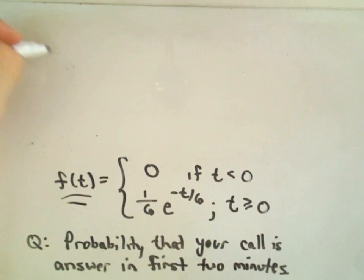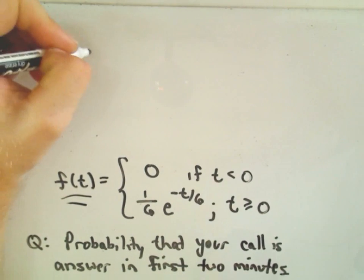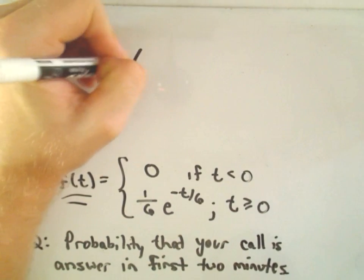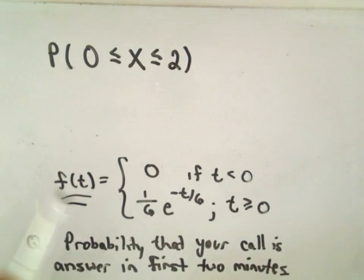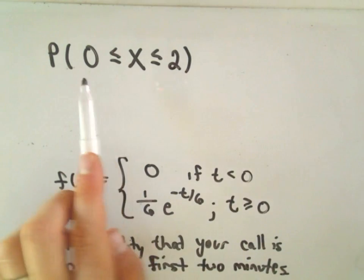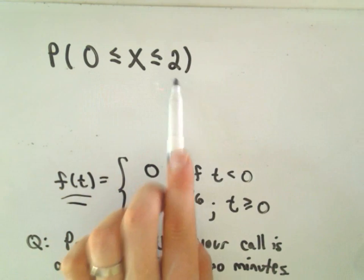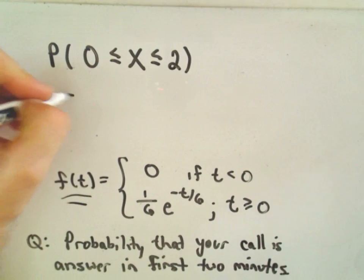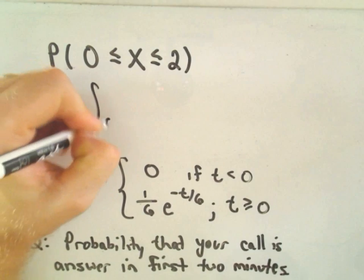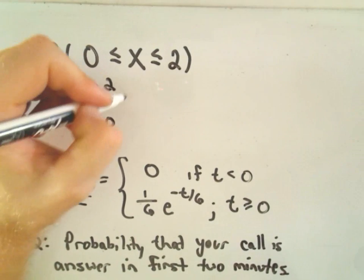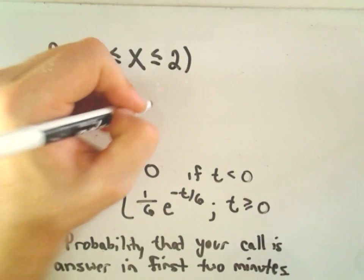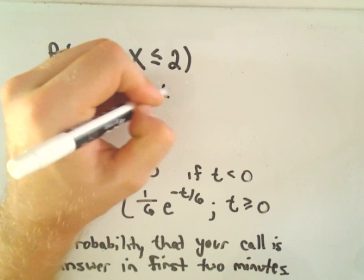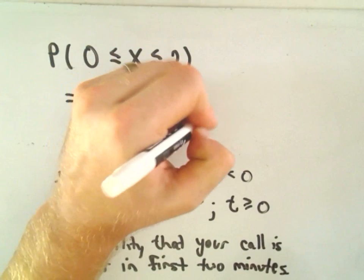So again, the idea is we're trying to find the probability that our random variable x is between zero and two. And again, what that says is we wait between zero minutes and two minutes. So again, all that does is those become your limits of integration zero to two. And then we simply have to integrate one-sixth e to the negative t over six dt.